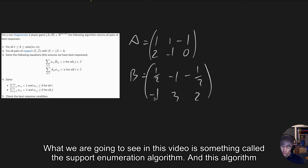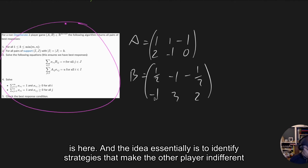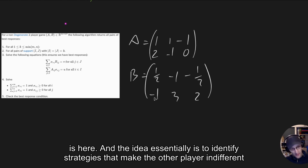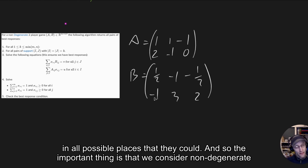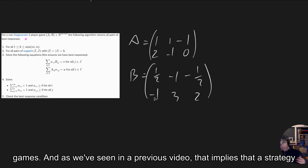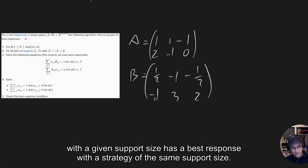What we're going to see in this video is something called the support enumeration algorithm. The idea essentially is to identify strategies that make the other player indifferent in all possible places that they could. The important thing is that we consider non-degenerate games, which implies that a strategy with a given support size has a best response with a strategy of the same support size.